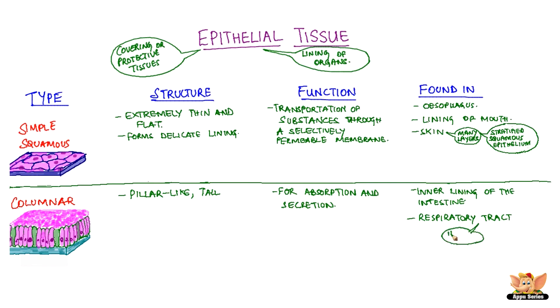The respiratory tract has columnar tissue having cilia, hair-like structures. Such columnar tissue is called ciliated columnar epithelium.